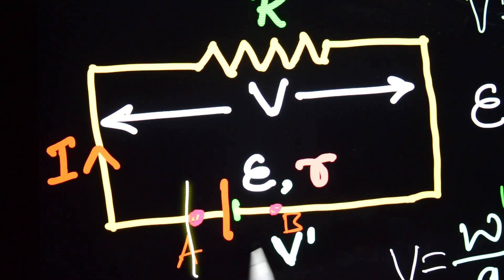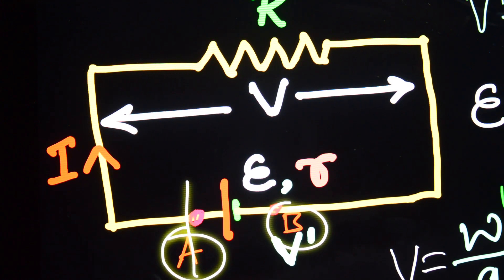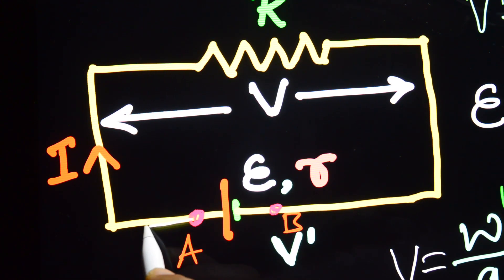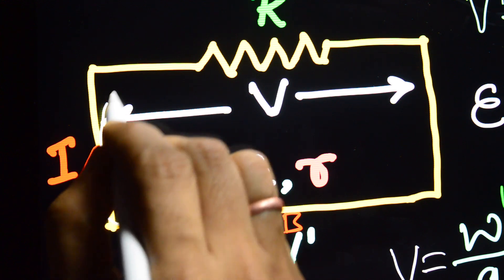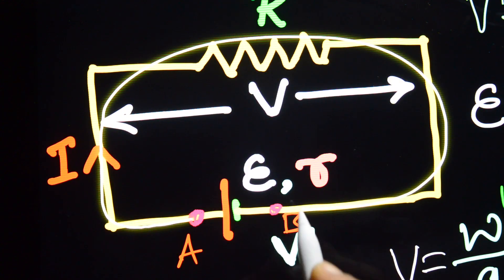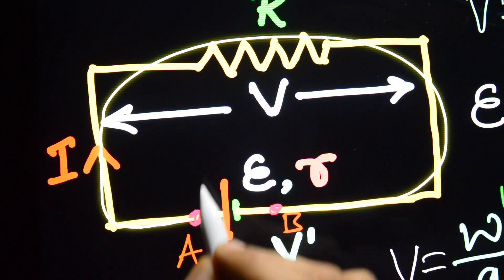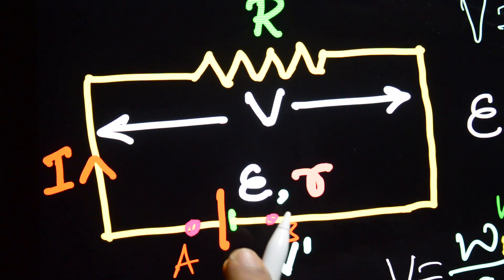Suppose there are two points. A and B — point A is on one side, and point B is against the external resistor R.